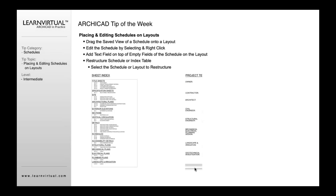You can also restructure schedules. For example, if you've got a sheet index that's getting very long, or some other type of schedule, and you want to reposition it so that rather than just one column you've got two columns — you can have shorter columns across two columns.